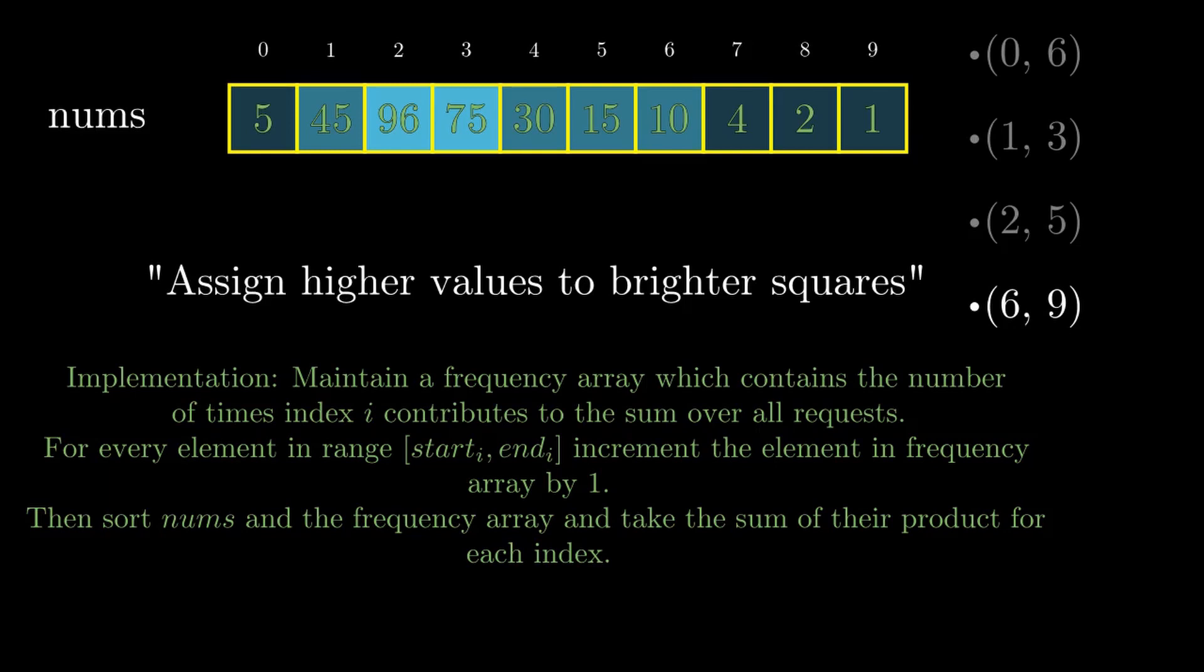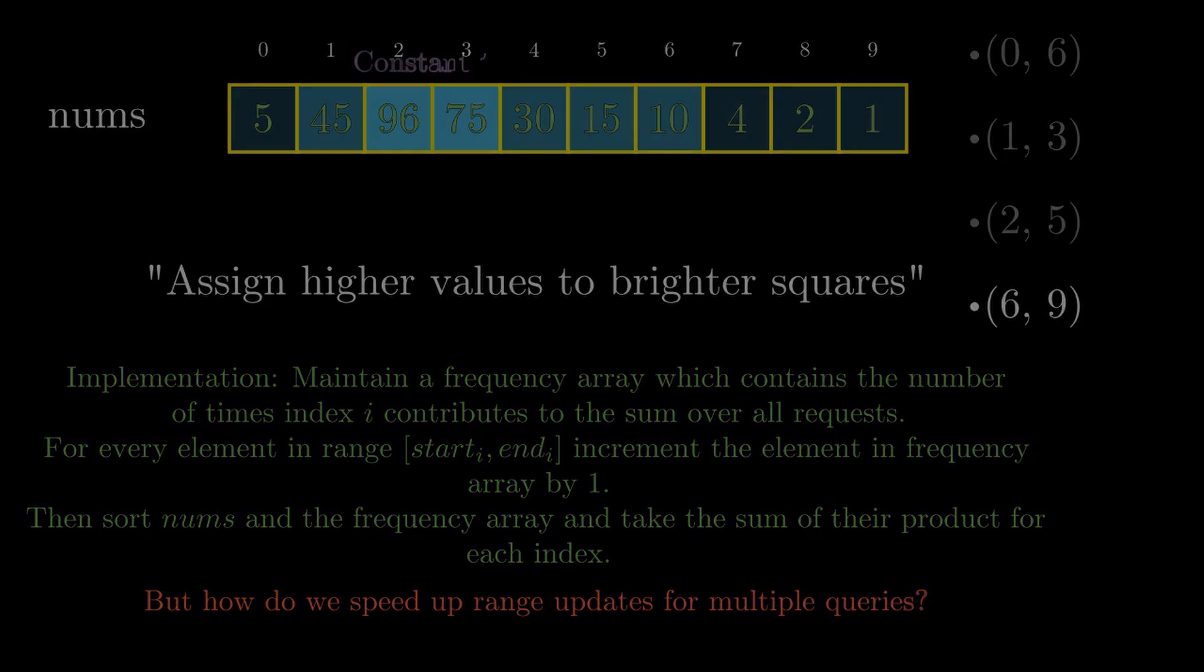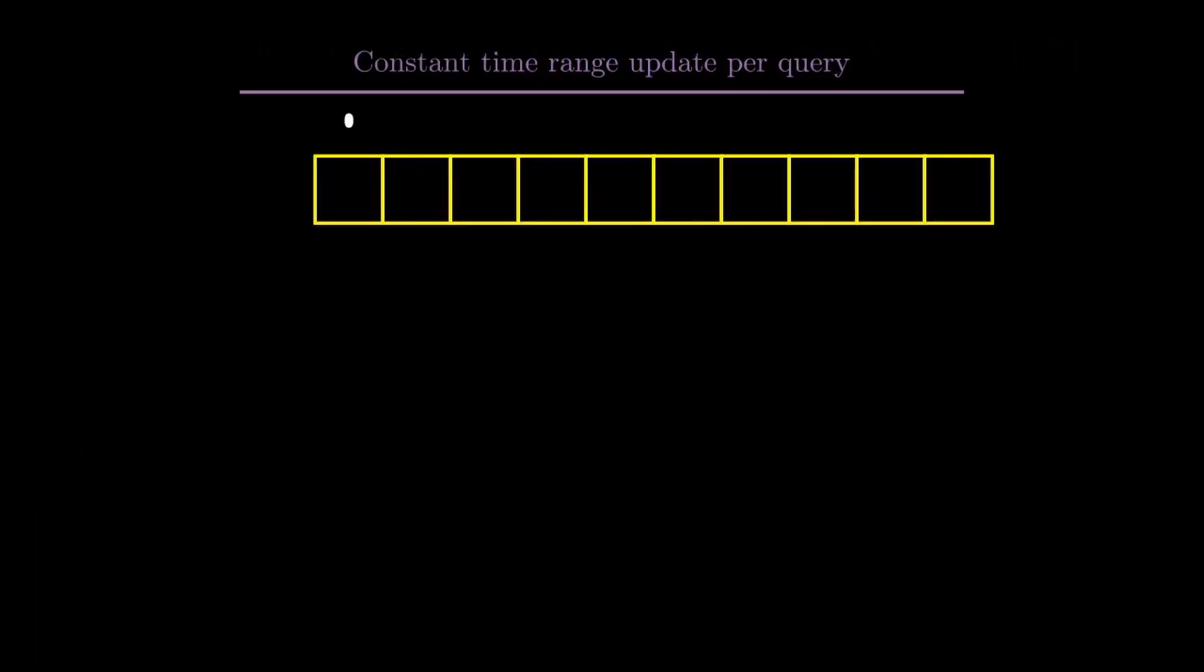But if you try incrementing the value in range start to end for every query, that will time out. If there are q queries and each is of the form 0 to n-1, then you will be incrementing the whole array for each query. The time complexity will be O(q*n), which will time out. So how can we speed up this range update operation?